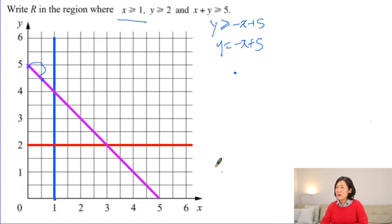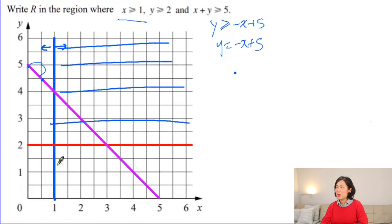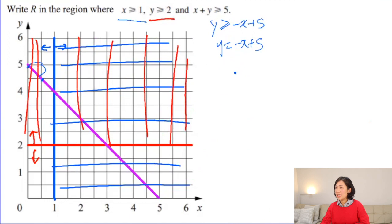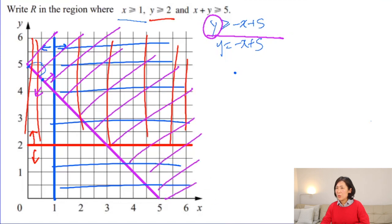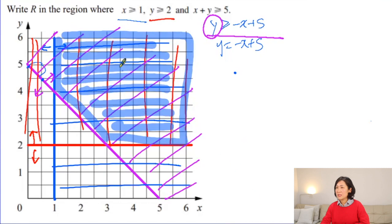Now find the regions. X is greater than 1 — shade to the right side. Y is greater than 2 — shade above the horizontal line, so shade upward. Y is greater than minus x plus 5 — shade above that line. Find the common region shaded by all three — the red, blue, and purple lines. That overlapping region satisfies all three inequalities. Label it R — that is the answer.